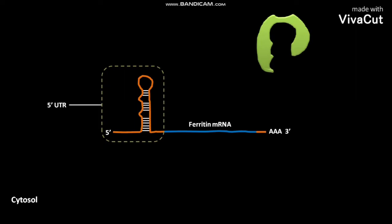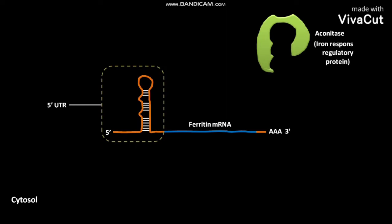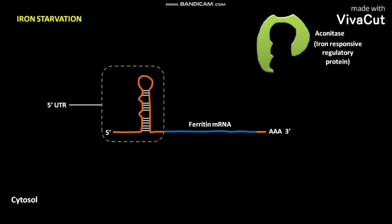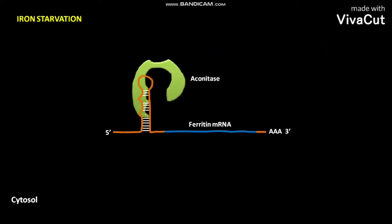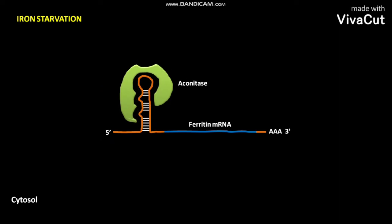This is the cytosolic aconitase. It is an iron-responsive regulatory protein. During iron starvation, the aconitase binds to the 5' UTR of ferritin mRNA. As a result of this binding, translation of ferritin mRNA is blocked.